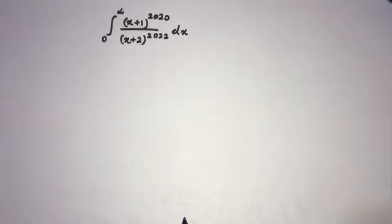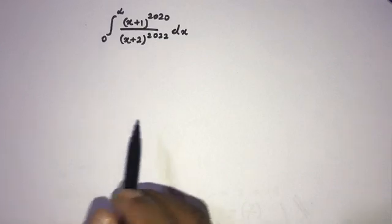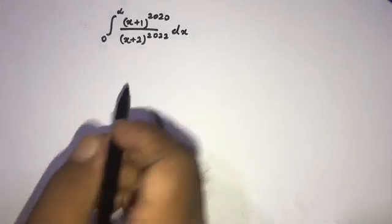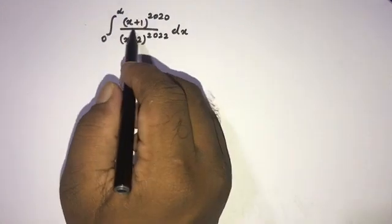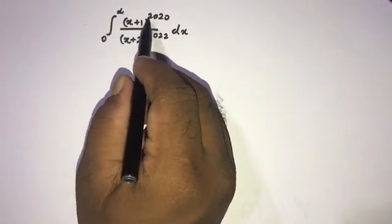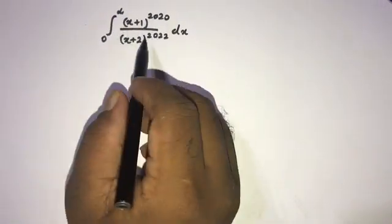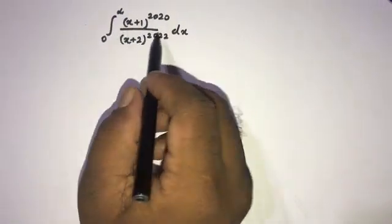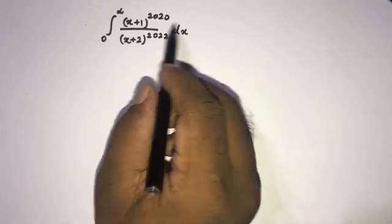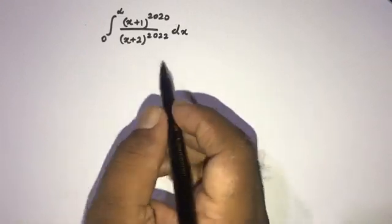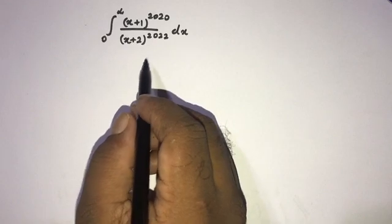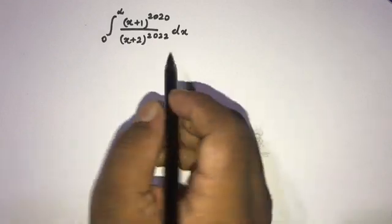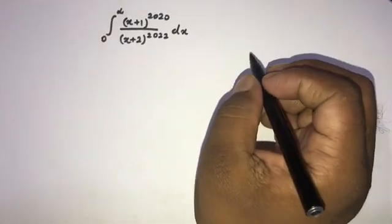Hi, welcome to the Mathematics channel. Today we are going to solve another interesting integral. The question is the integral from 0 to infinity of (x+1)^2020 over (x+2)^2022 with respect to x. Let's begin using the substitution method.